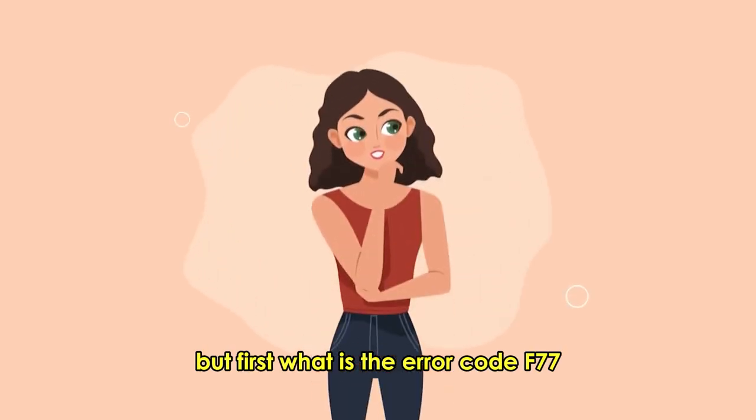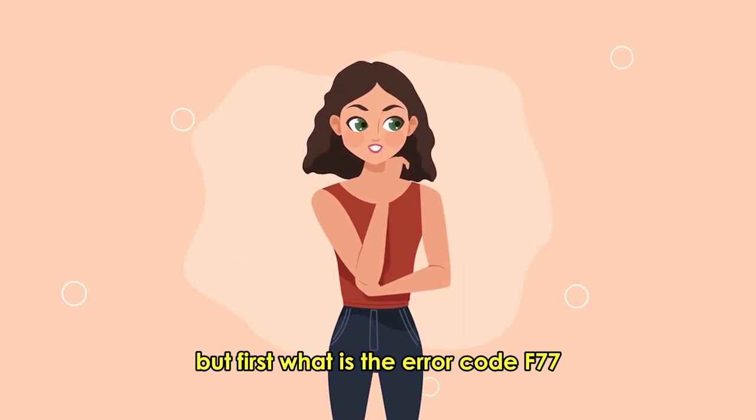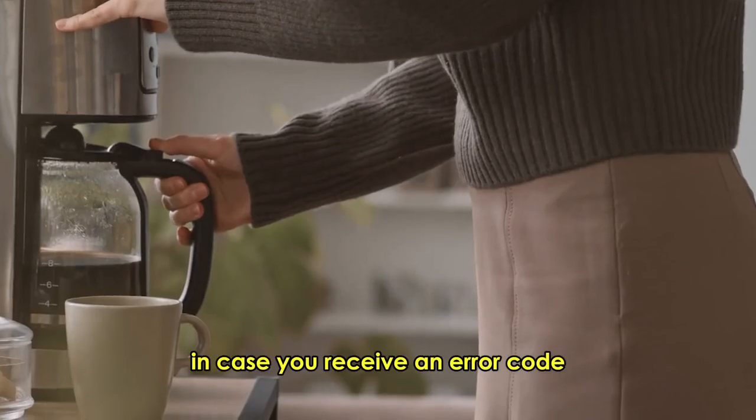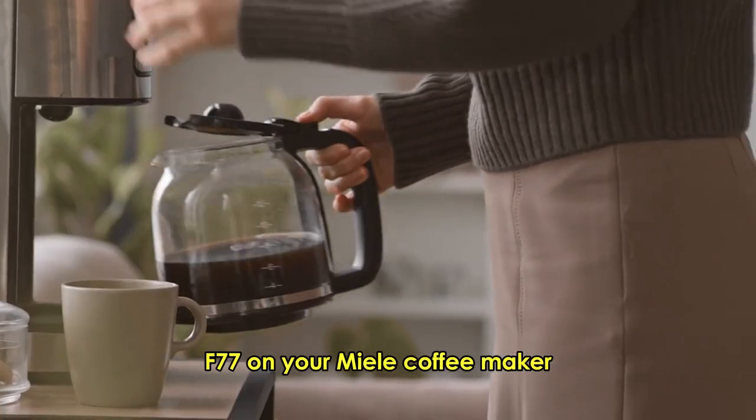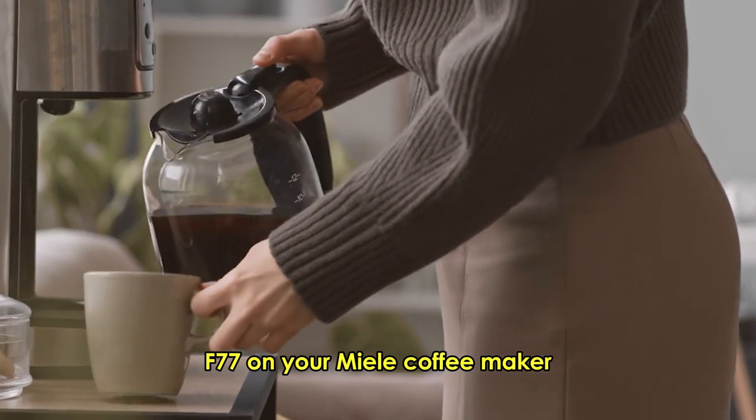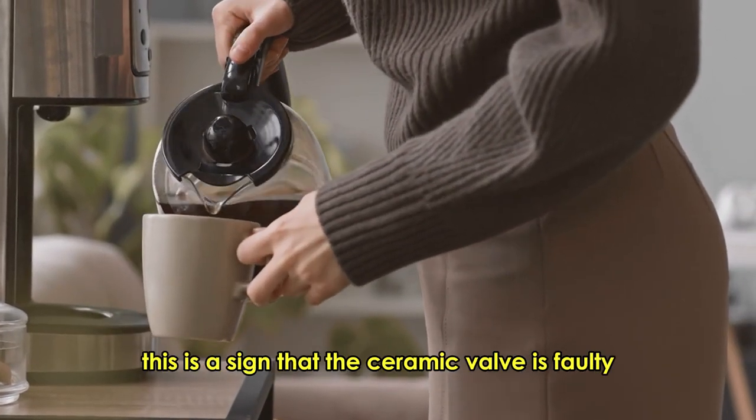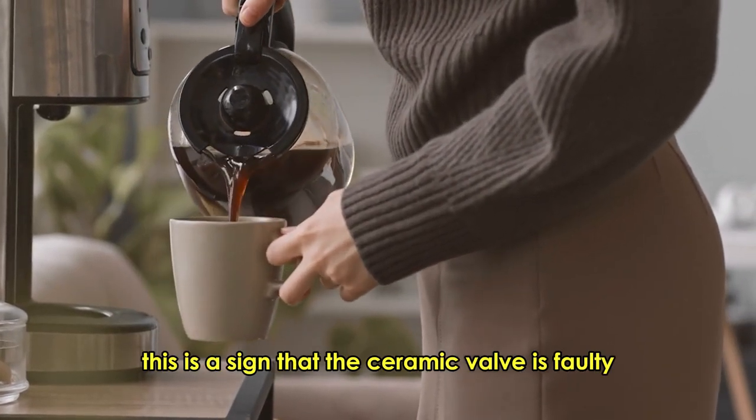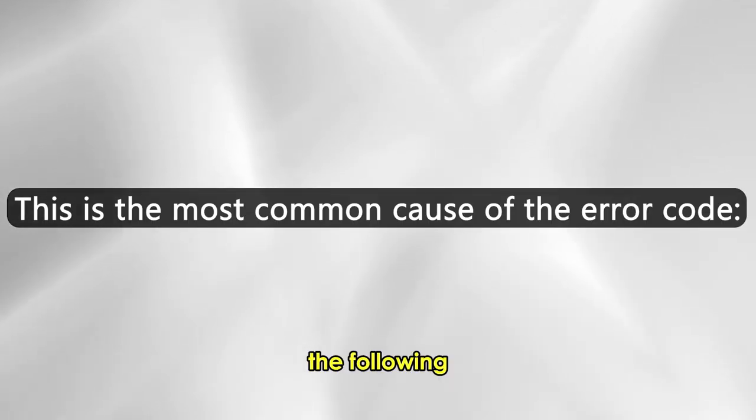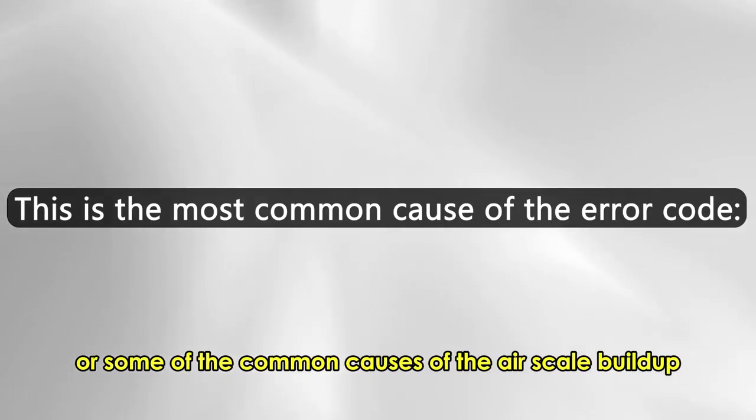But first, what is the error code F77? In case you receive an error code F77 on your Miele coffee maker, this is a sign that the ceramic valve is faulty. The following are some of the common causes of the error.